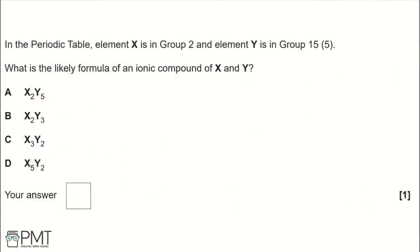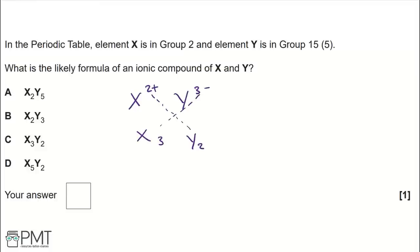Element X is in group 2 (charge +2) and element Y is in group 15 (charge −3). Using the crossover method, the 2 goes to Y giving Y₂, and the 3 goes to X giving X₃. This matches option C. To get the mark, write C in the answer box.